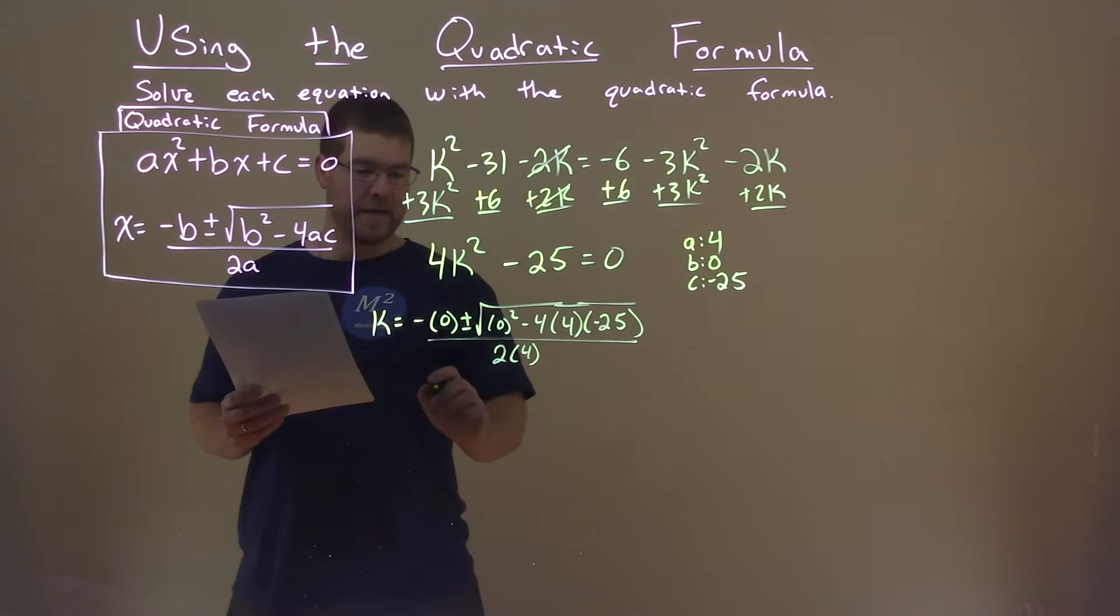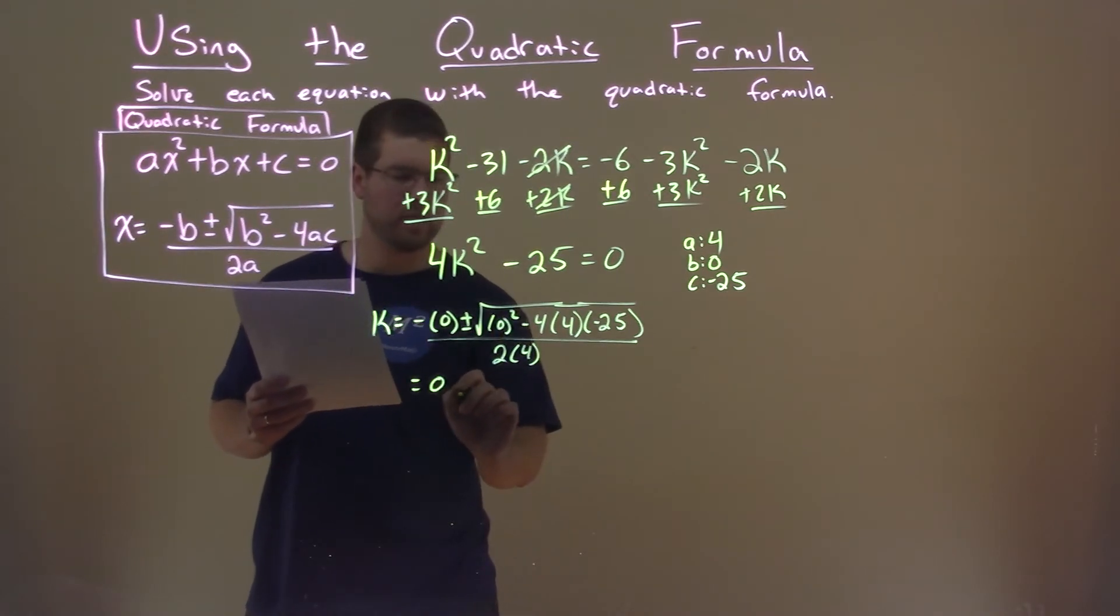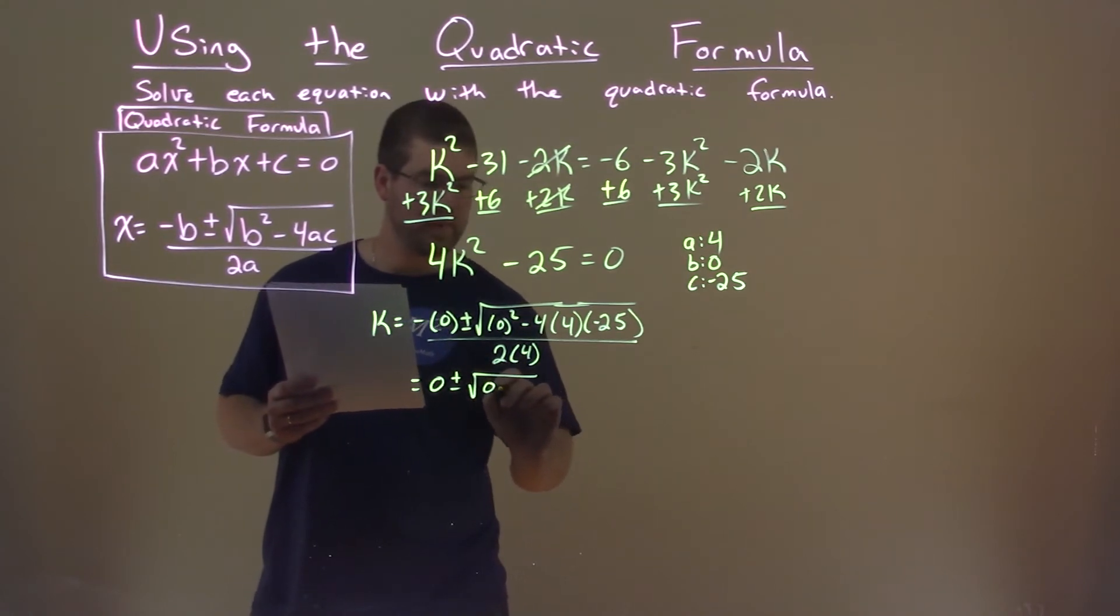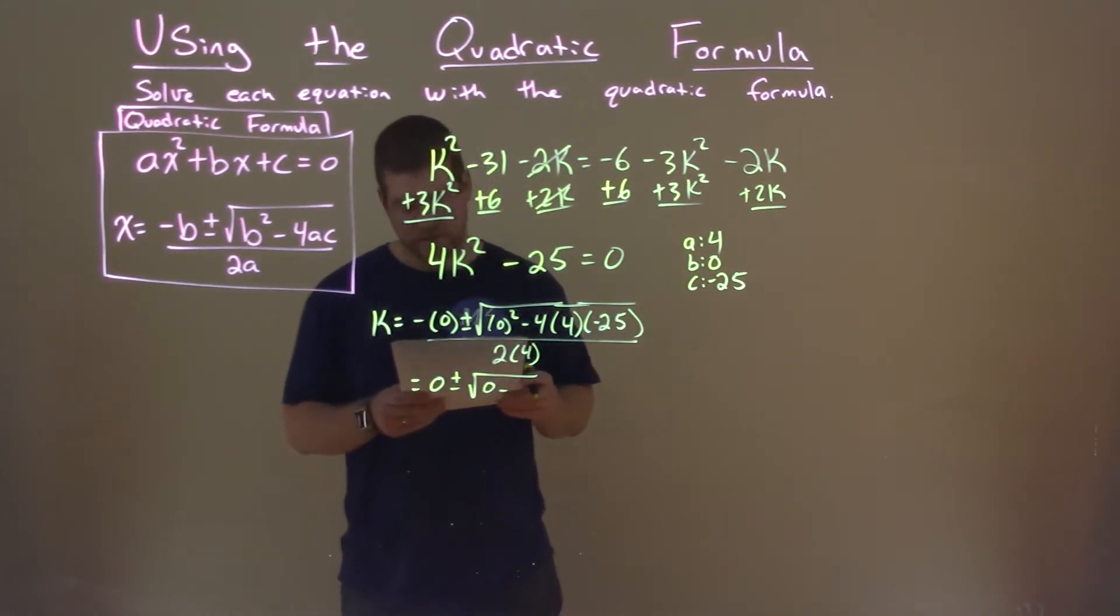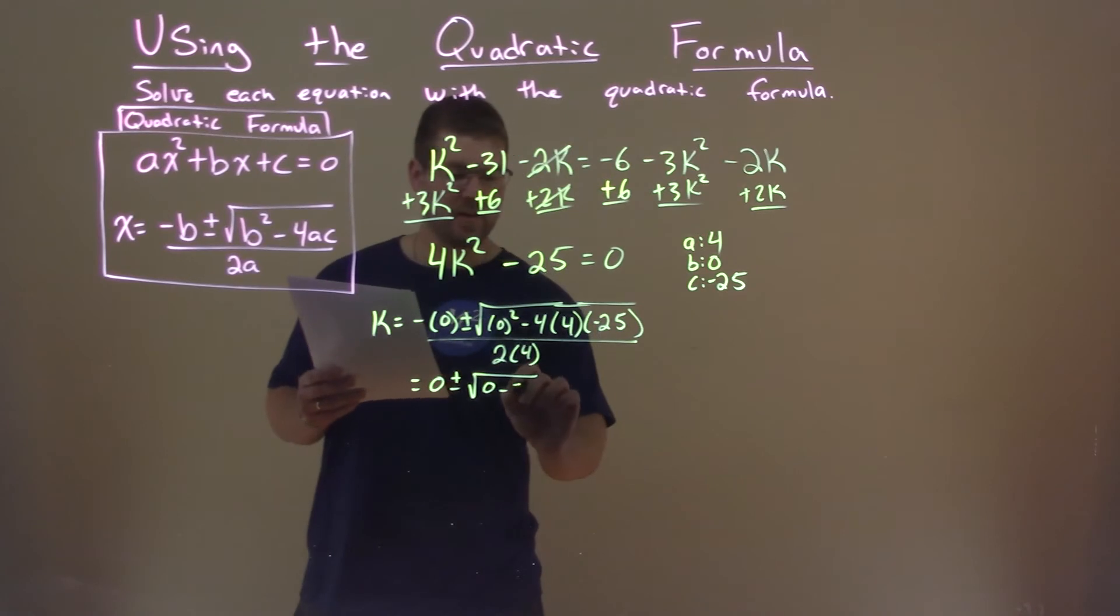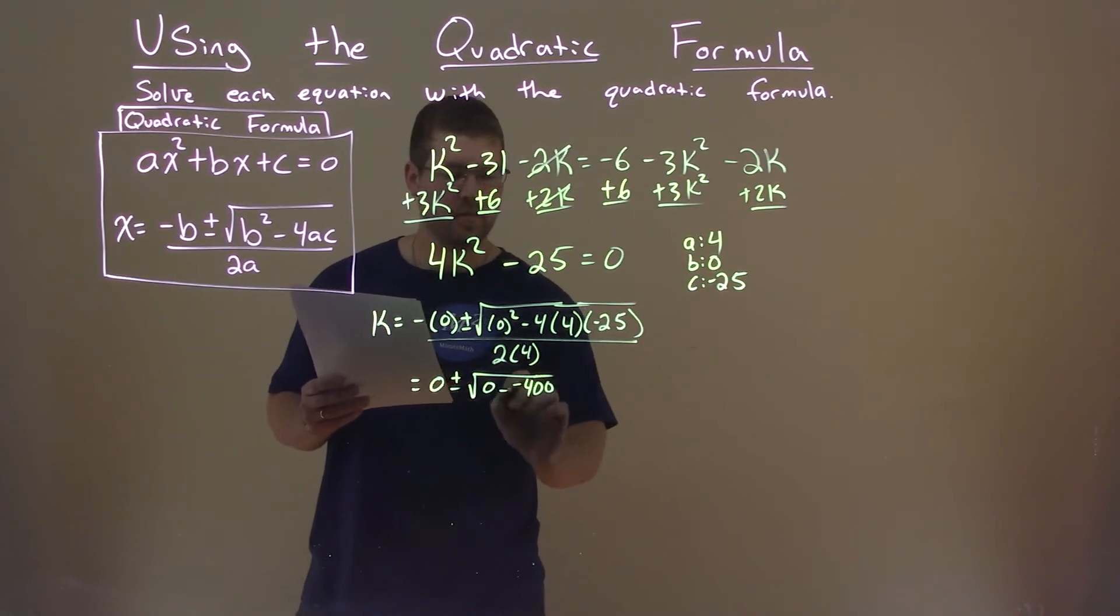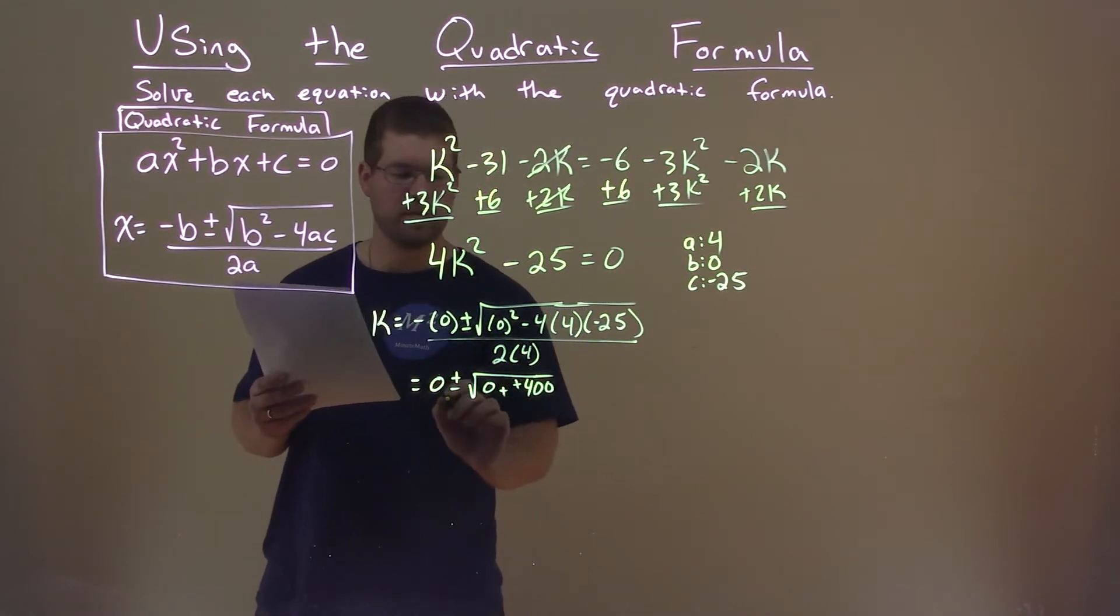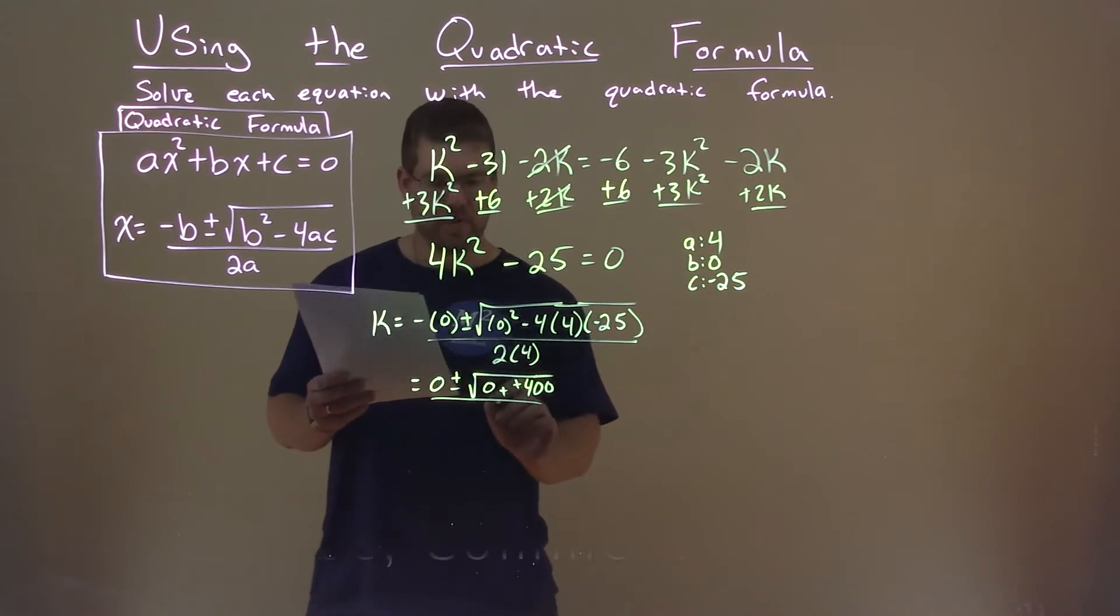So let's simplify here. Negative 0 is just 0. Plus or minus 0 squared is 0. Minus 4 times 4 times negative 25 is a negative 400. But we have minus a negative, so it's adding a positive. All over 2 times 4, which is 8.